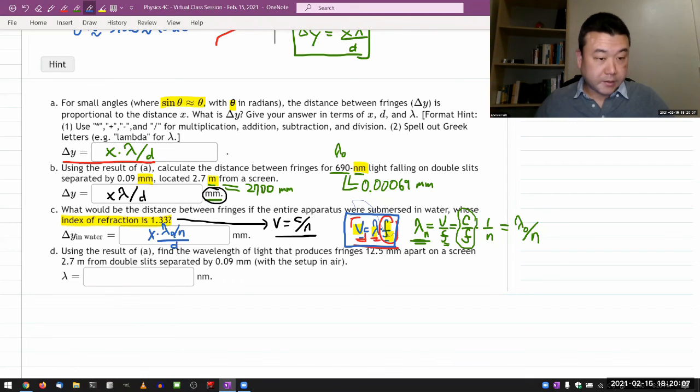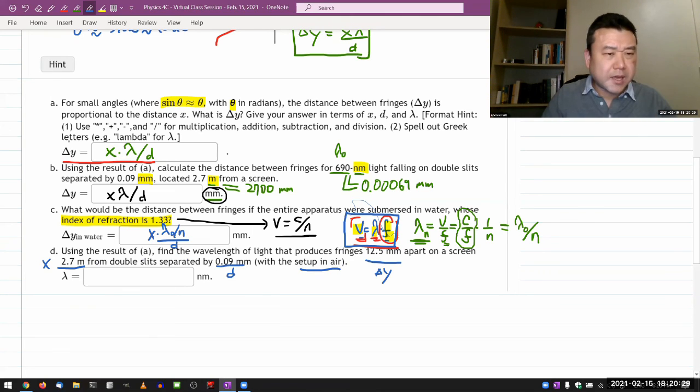Okay, so part D, using the result of A, find the wavelength of light that produces fringes some delta y apart on the screen x from doubly separated by d with the setup in air. That seems rather simple. I can take the result in A, solve it for lambda. It should be d times delta y divided by x.